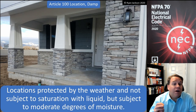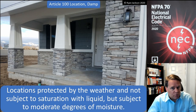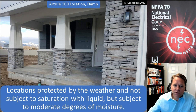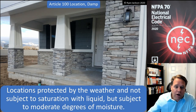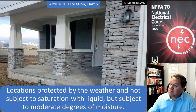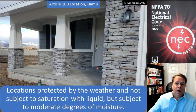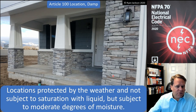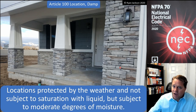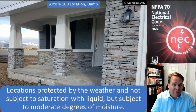A damp location is a location that's protected from the weather and not subject to saturation with liquid, but subject to moderate degrees of moisture. If I walk out to the backyard of this house, that's a wet location. If I'm standing on the front porch by the front door, it's relatively protected — you might get slightly wet in a snowstorm or rainstorm, but you're not going to get soaked. So it's not subject to saturation, but it is subject to moderate degrees of moisture.